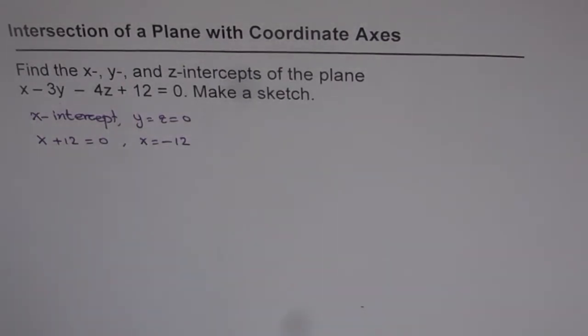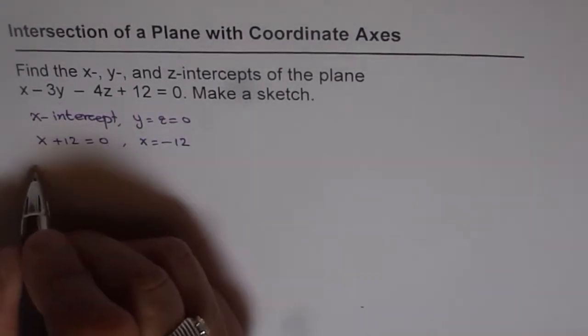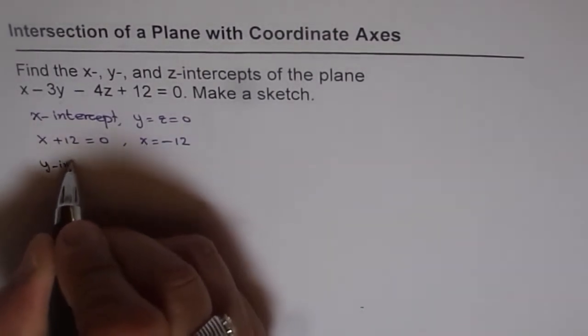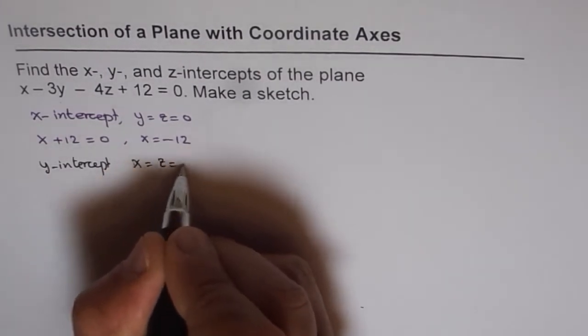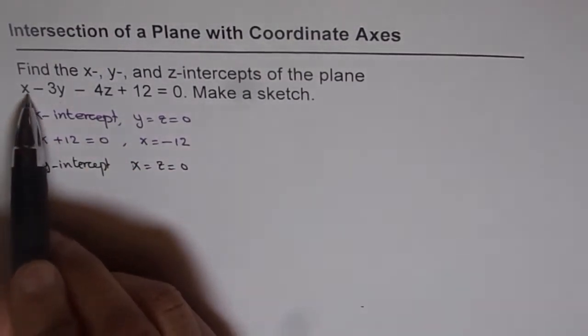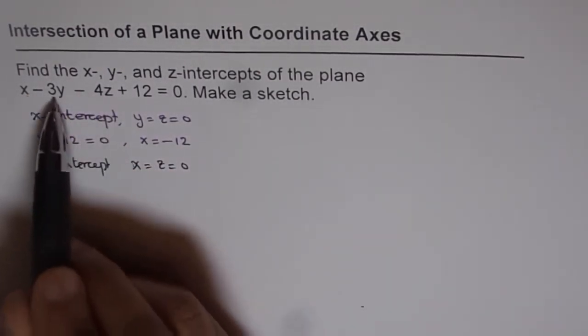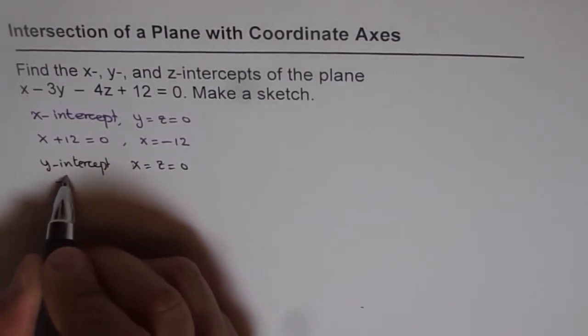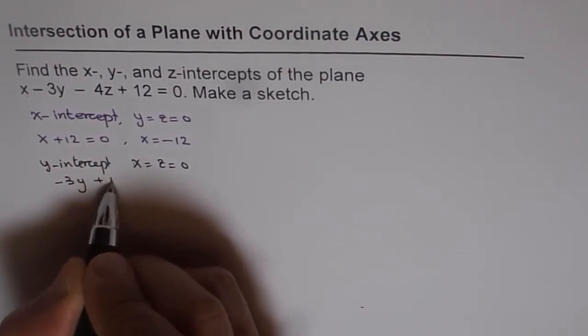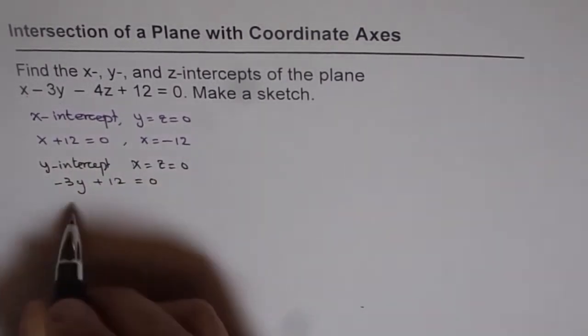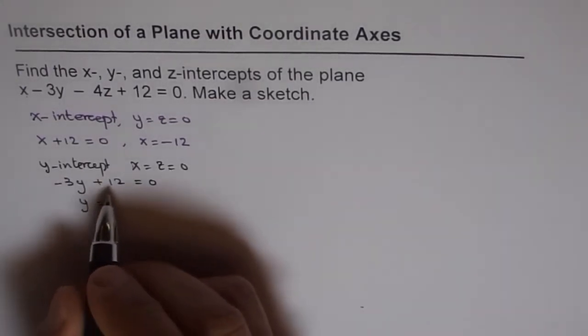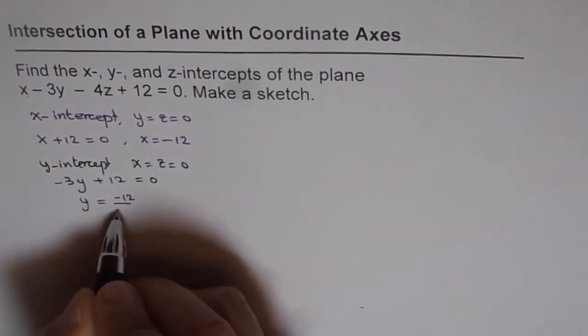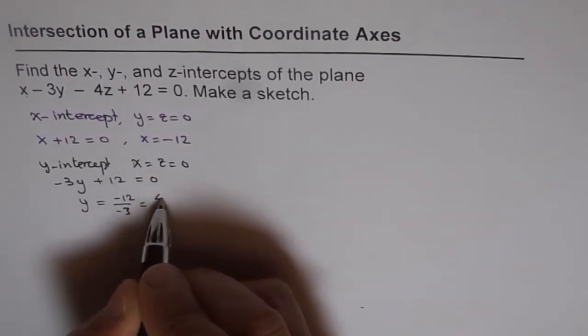Now, to find the y-intercept, we will do the same thing. But this time, x and z will be equal to 0. So if you substitute x and z equals to 0, you get the y-intercept, which is minus 3y plus 12 equals to 0. And that gives us a value of y as equals to minus 12 divided by minus 3, which is 4.